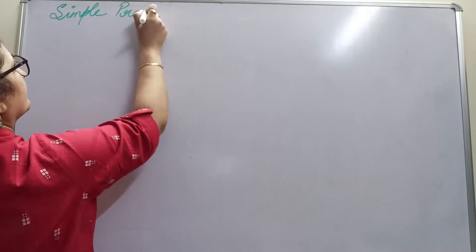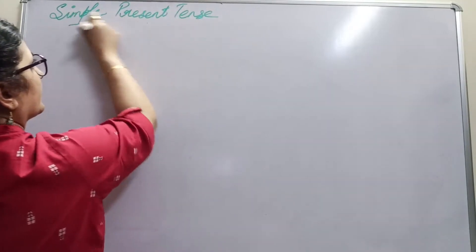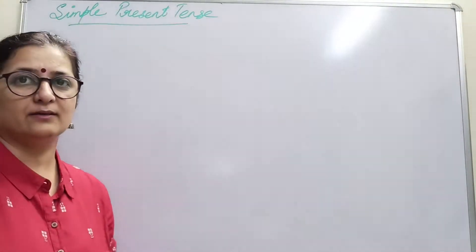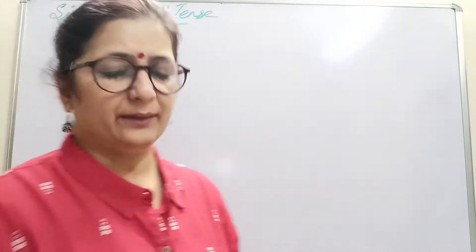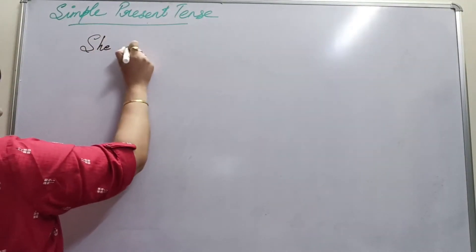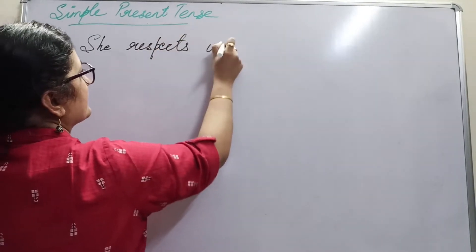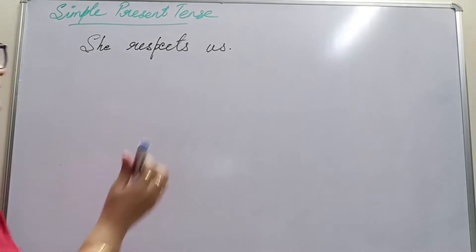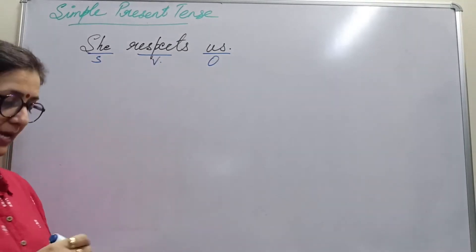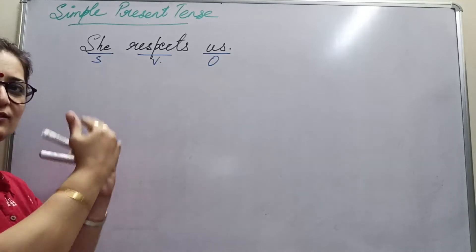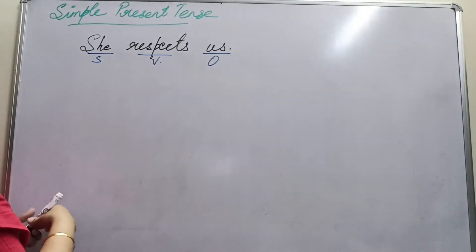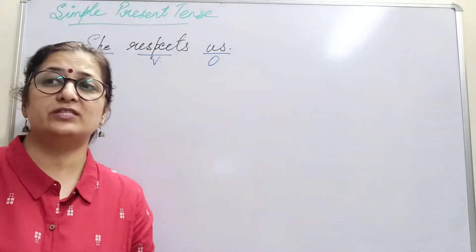Simple present tense. Suppose I give you a sentence in the simplest form: 'She respects us.' This is our sentence. She is the subject, us is the object, and respects is the verb. Now how do we move it? The object becomes the subject and the subject becomes the object. So 'us' comes this side — but 'Us respects she' doesn't sound right at all.